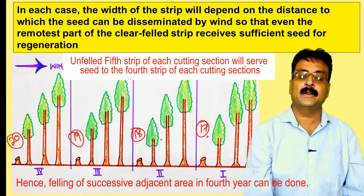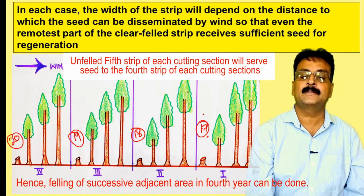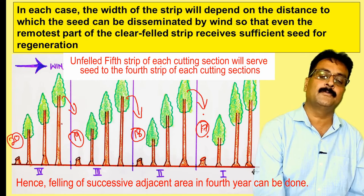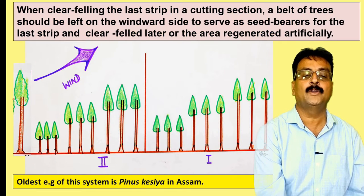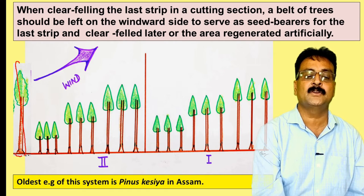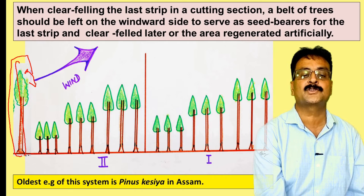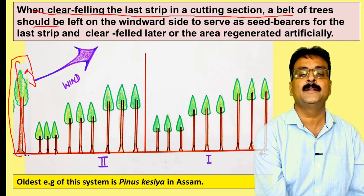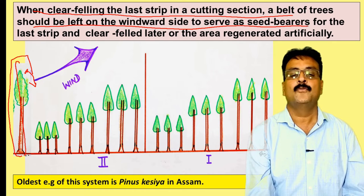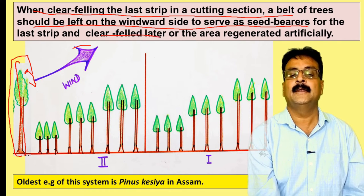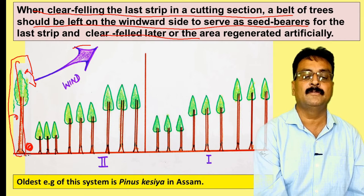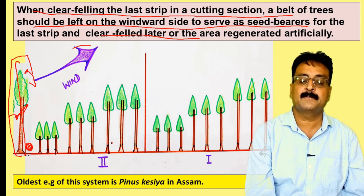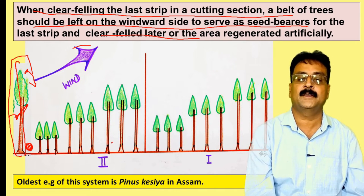One important consideration: when clear felling the last strip in a cutting section, a belt of trees should be left on the windward side to serve as a seed bearer for the last strip, and this belt should be clear felled later only after that area has been regenerated. This system is the oldest of its kind; one example is Pinus kesiya in Assam.